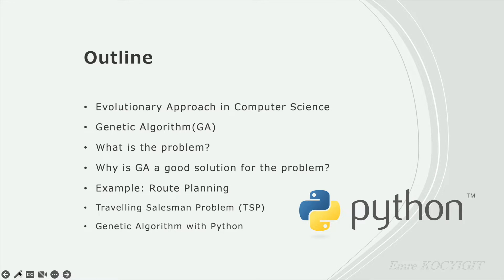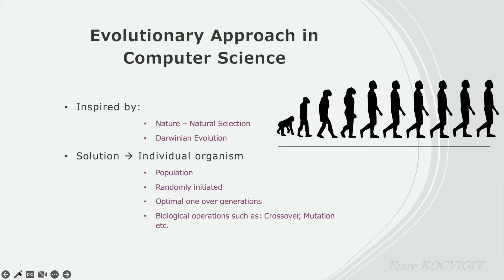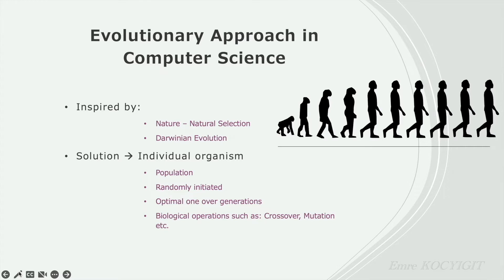Let's start with the evolutionary approach. You can estimate from the name — evolutionary approach in computer science is an output of evolutionary theory inspiration. Researchers are inspired by nature and the natural selection principle, Darwinian evolution theory, then adapt these principles to different computer science and optimization problems. In the evolutionary approach, we can think of each solution as an individual organism, and possible solutions — potential individuals — will generate a population, a solution population.